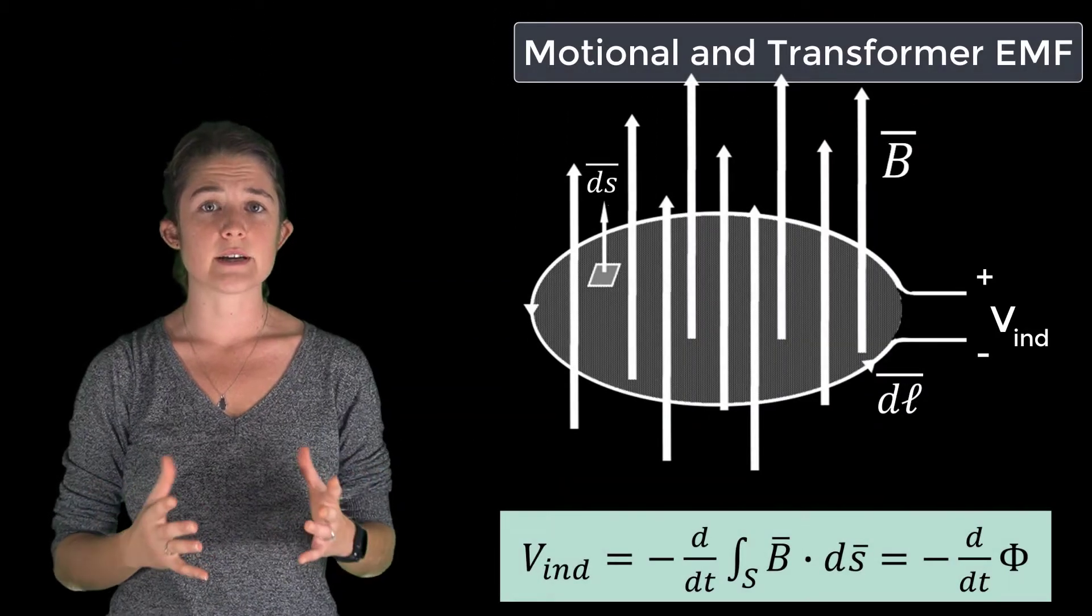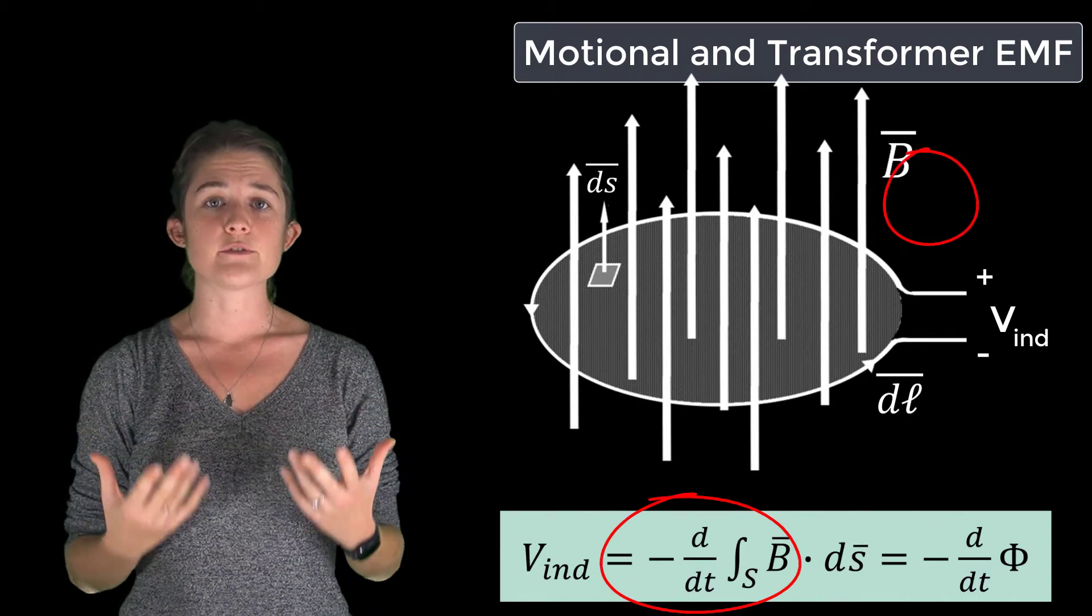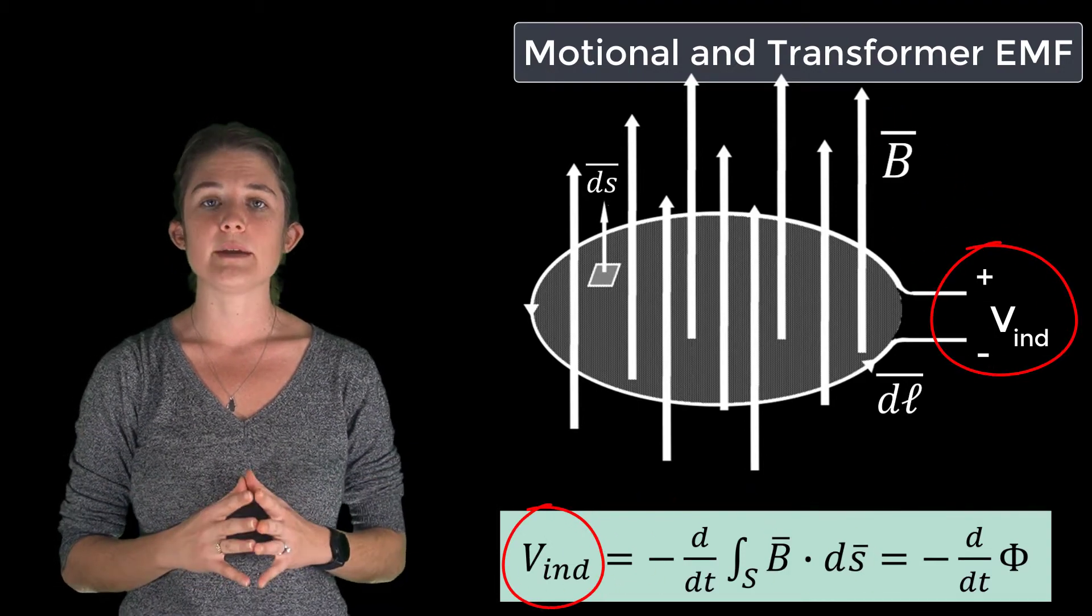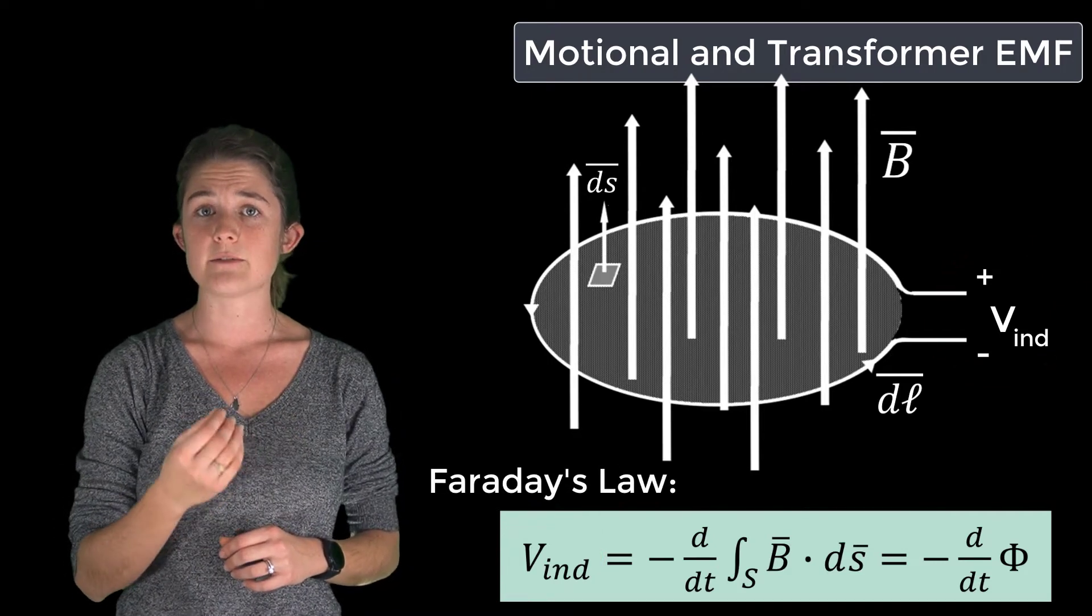When the total magnetic flux through a conductive loop has a nonzero derivative in time, it will induce a voltage around the loop, which may be calculated by Faraday's law as induced voltage equals negative the time derivative of the